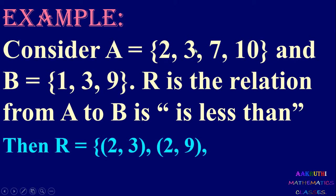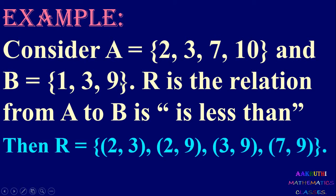Next we start with 3: 3 less than 1 is not true, 3 less than 3 is also not true, but 3 less than 9 is true, so we write (3, 9). Then for 7: 7 less than 1 is not true, 7 less than 3 is not possible, but 7 less than 9 is possible, so we write (7, 9). For 10: 10 less than 1, 3, or 9 are all not possible. So relation R is the set of ordered pairs {(2,3), (2,9), (3,9), (7,9)}.